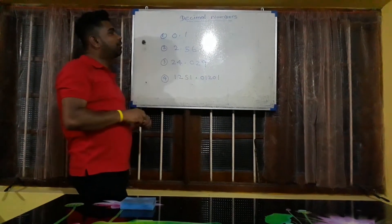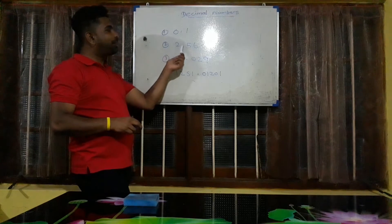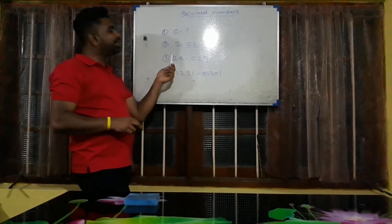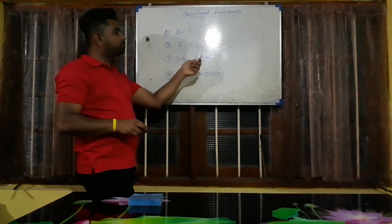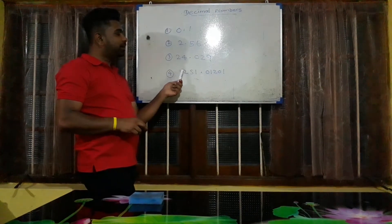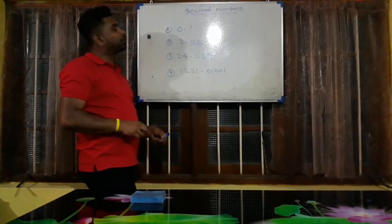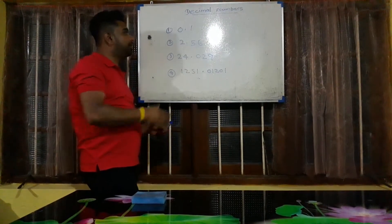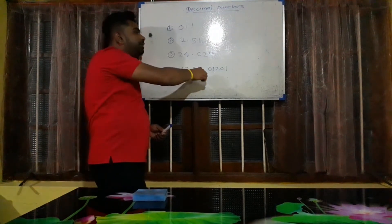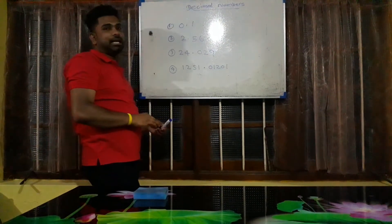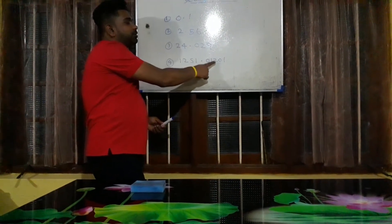The first one we call 0.1. Here, 2.56. This number, 24.029. Here, 1,251.01201. You need to remember this: we name the whole number part as we know it, but after the decimal point you need to separately name the digits one by one.